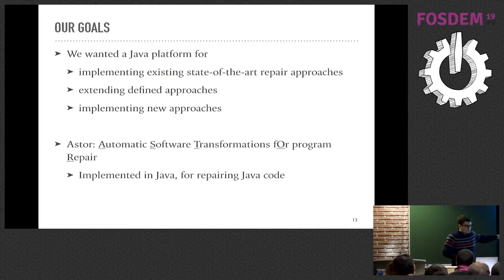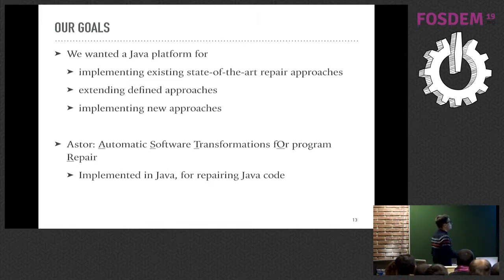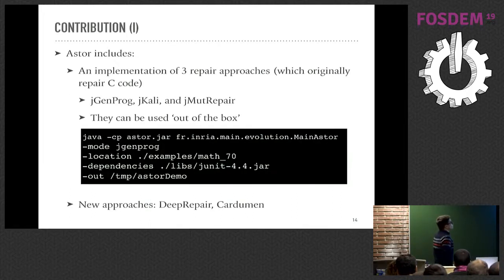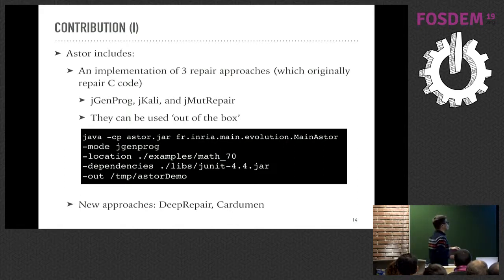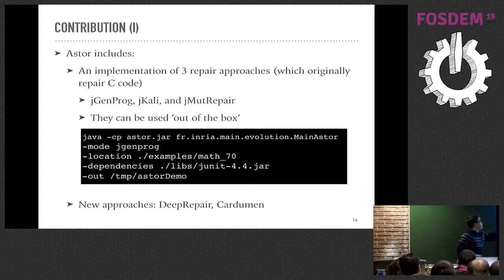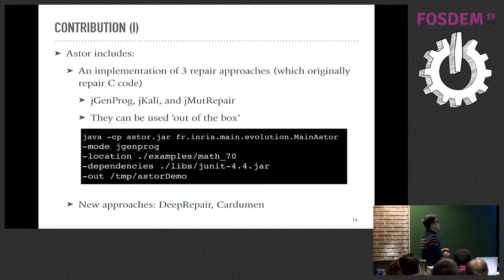So we created ASTOR, whose name came from Automatic Software Transformation for Repair. ASTOR is available on GitHub and it's quite easy to use. Here I show an example of the command, where we have an argument 'mode' that specifies the name of the repair approach we want to execute.